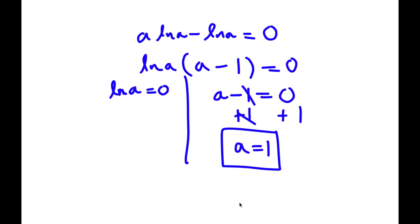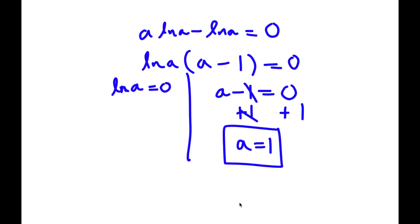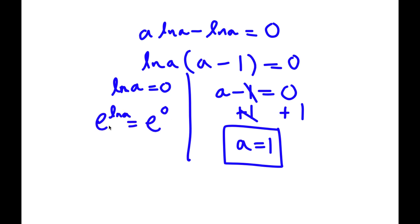Now for ln a equals zero, to get the value of a, I'm going to take e to the power of both sides. So I get e to the power of ln a is equal to e to the power of zero. Since e and ln cancel out, I get a is equal to e to the power of zero, which is one — so I get a equals one again.